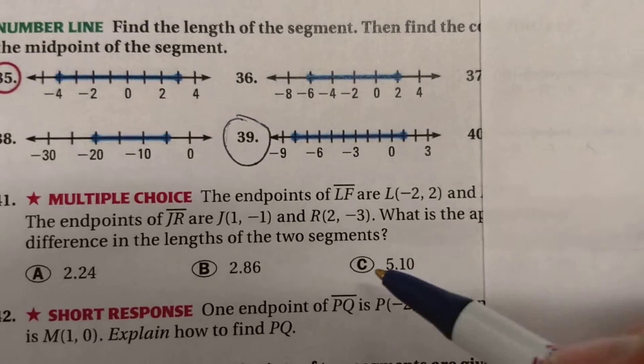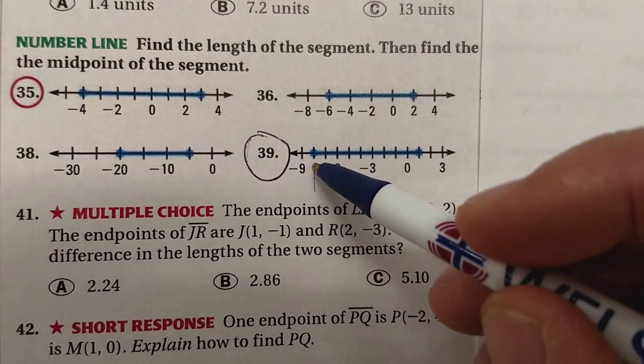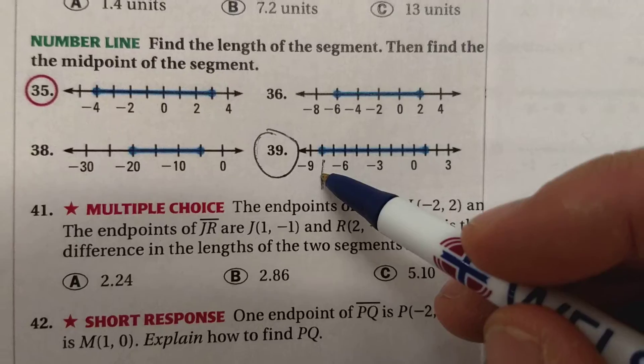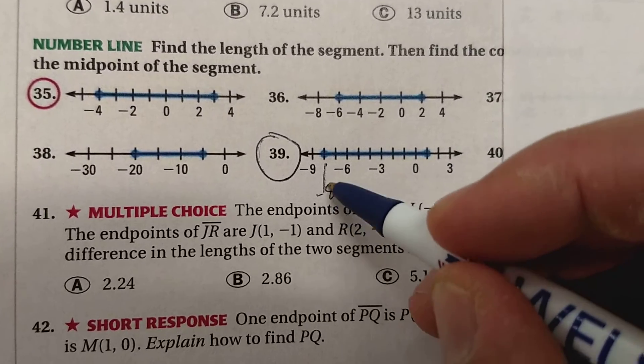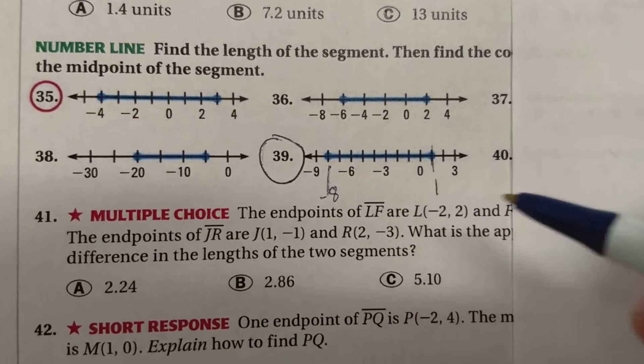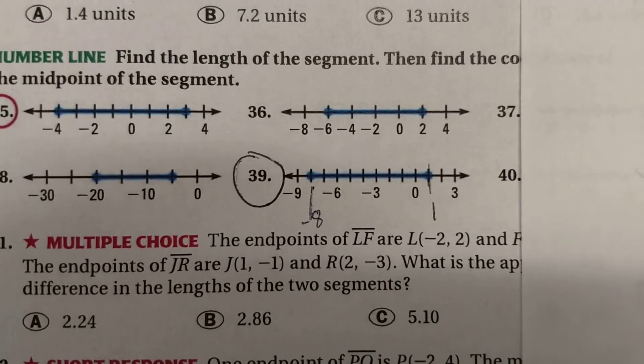So I'm looking at 39, and you can see that we're going from, it looks like negative 8, up to that looks like 1. And so we're going to find the distance.